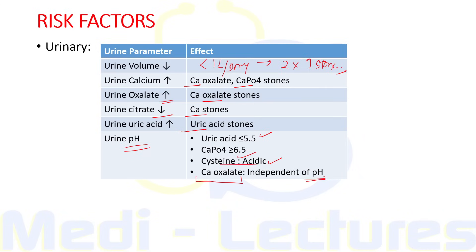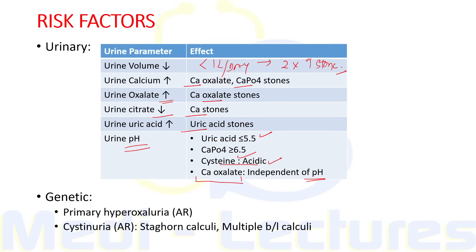There are some genetic conditions which predispose to stone formation. Primary hyperoxaluria is an autosomal recessive condition associated with increased endogenous oxalate generation from the liver. Cystinuria is also autosomal recessive, associated with staghorn calculus and multiple bilateral calculi. In cystinuria there is abnormal reabsorption of filtered basic amino acids in the nephron, and there is increased cystine excretion in urine.